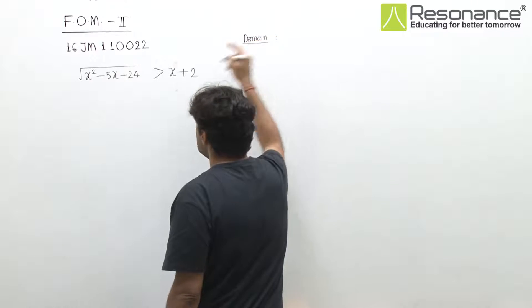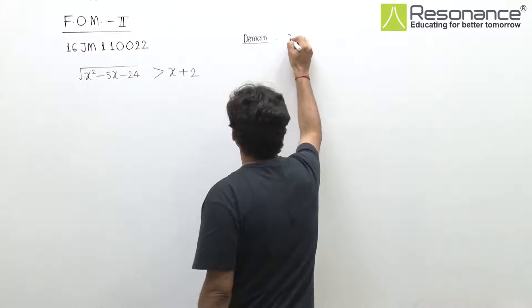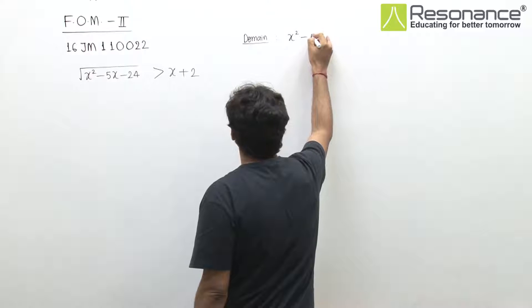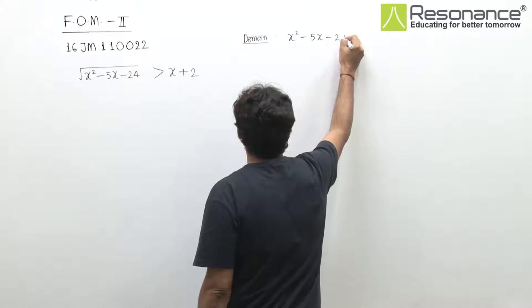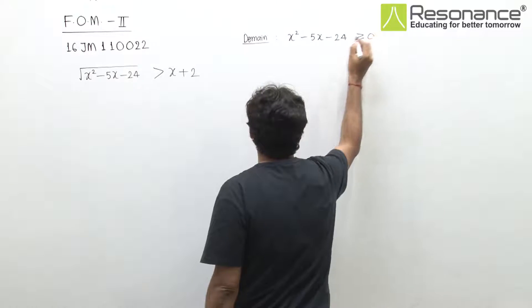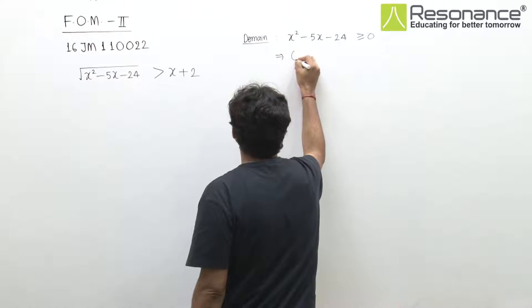What values of x make this meaningful? This is x² - 5x - 24, which should be greater than or equal to 0. And it can be factorized very easily.